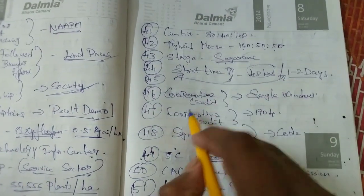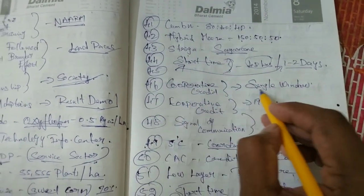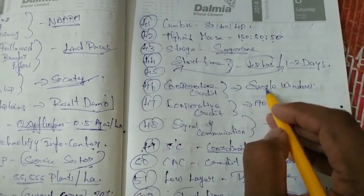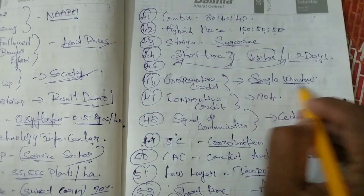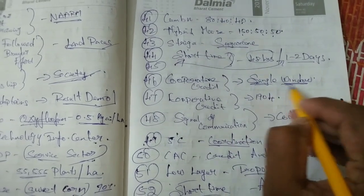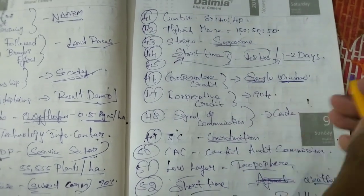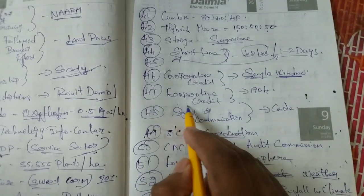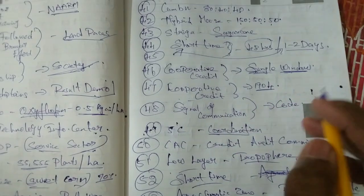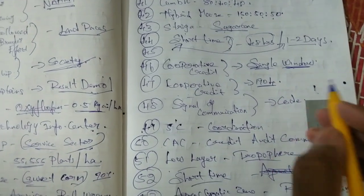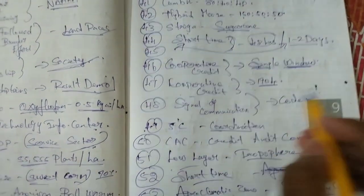That's one of the co-operative credit society. It's single window. Co-operative society — single window. That's one of the co-operative credit. The co-operative credit is 19.04.